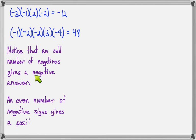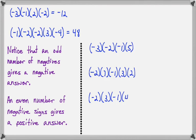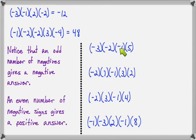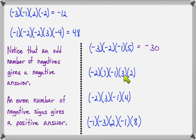An odd number of negative signs gives a negative answer; an even number gives a positive answer. First problem: one, two, three negative signs — odd — so negative. Three times two is six, six times five is 30, giving negative 30. Next: one, two negative signs — even — so positive. Two times seven is 14, 14 times three is 42, 42 times two is 84, giving positive 84. Then: one, two negative signs — even — positive. Two times three is six, six times four is 24, giving positive 24.